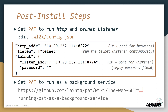Once you have PAT WinLink installed, you'll need to edit the configuration file using your favorite text editor on your computer. The config.json file is typically found in the WL2K directory, and it's formatted as a set of key-value pairs using standard JSON syntax.